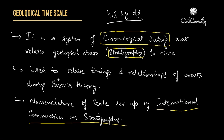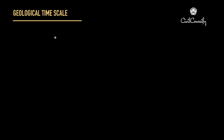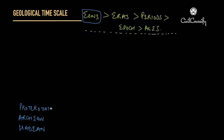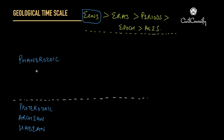Now let us look at the classification — the various divisions of this time scale. These divisions are classified into certain areas, and at the top of the ladder are the aeons. These aeons are basically of four types, and three of them are together known as Precambrian.